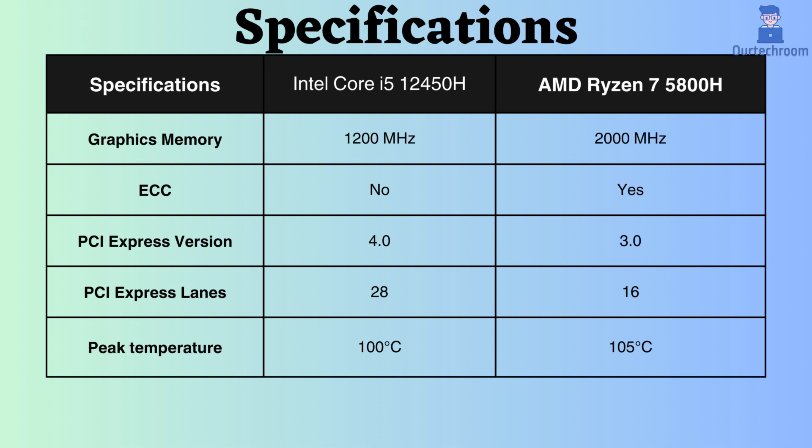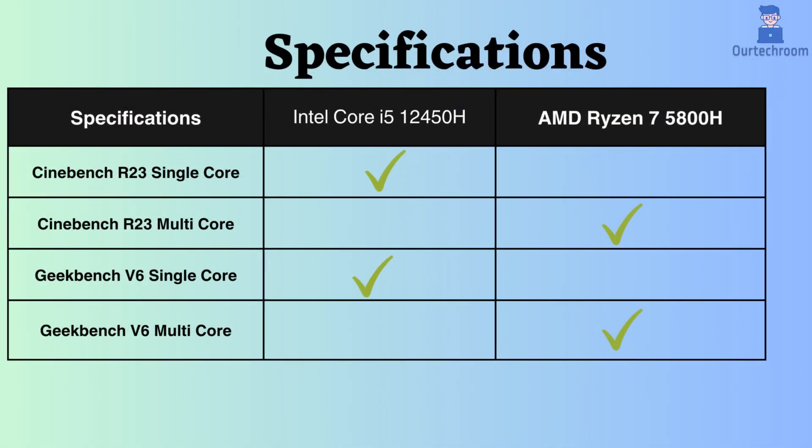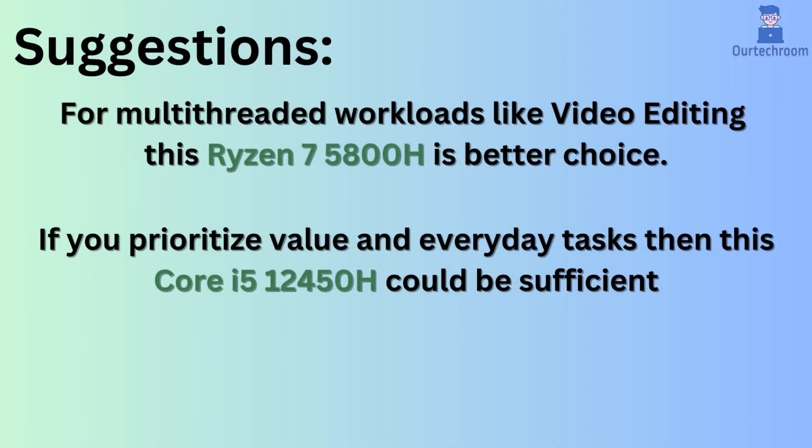The peak temperature support for AMD is higher than that of the Intel 12450H. Looking at the benchmarks, for multi-core performance the AMD Ryzen 7 seems to be better, while for single-core performance the Intel Core is slightly better. For multi-threaded workloads like video editing and scientific computing, the Ryzen 7 5800H is the better choice. If you prioritize value in everyday tasks, then the Core i5-12450H could be sufficient.